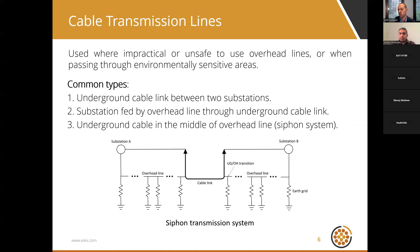Typical cable transmission lines are used where it is impractical or unsafe to use overhead lines, such as in urban areas or environmentally sensitive areas. Common types include: an underground cable link between two substations; a substation fed by an overhead line in series with an underground cable link; and a siphon system, where two sections of overhead line are on either side of a cable link in the middle.